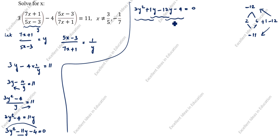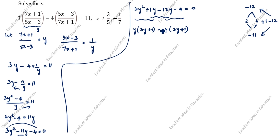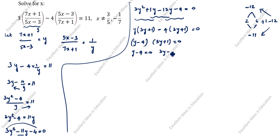Grouping: from the first pair (3y² + y), y is common — take it outside to get y(3y + 1). From the second pair (-12y - 4), -4 is common — giving -4(3y + 1). So we get (3y + 1)(y - 4) = 0. Therefore y = 4 or 3y = -1, giving y = -1/3.